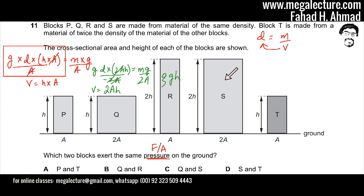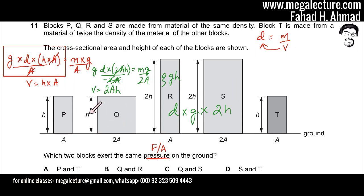For R and S, using ρGH, the pressure comes out to D × G × 2H, since their height is 2H. Both R and S give the same expression, so they exert equal pressure. However, there is no answer option listed for P and Q, nor for R and S directly.